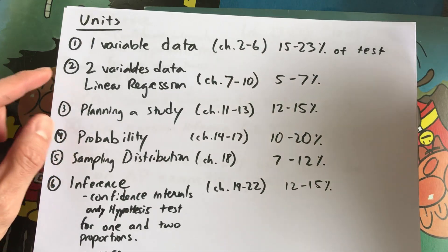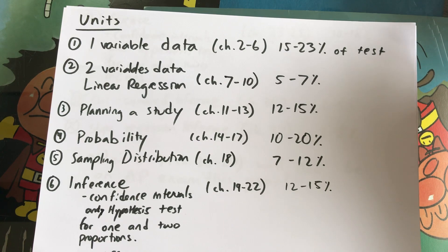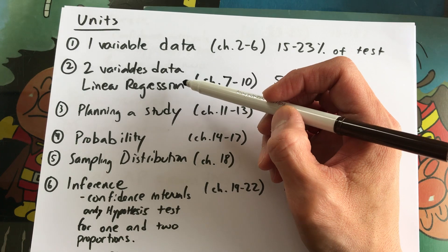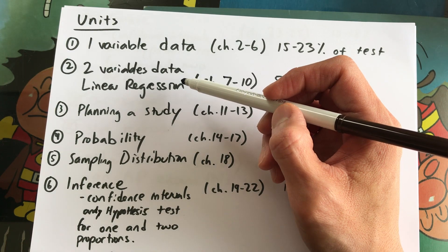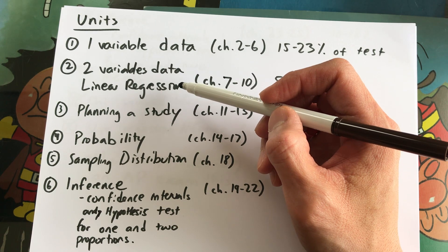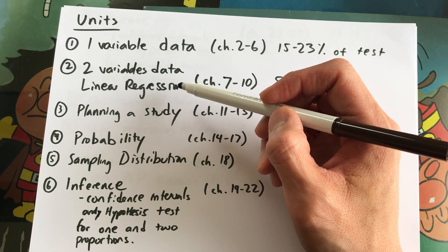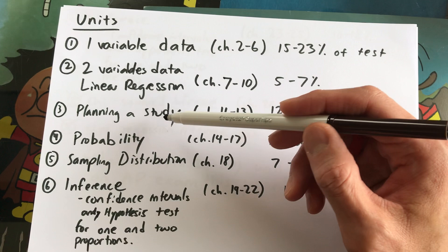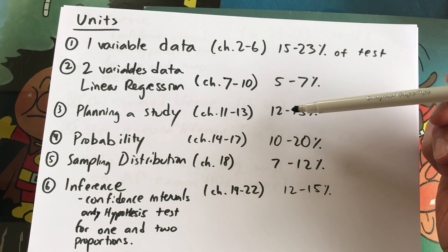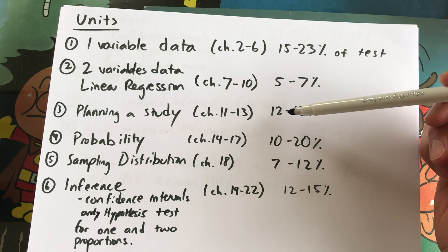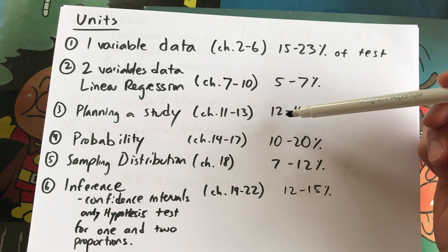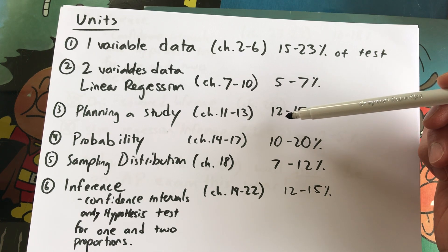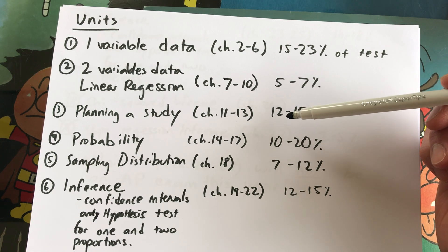Unit 2 is two-variable data — categorical or quantitative. This is where you do linear regression, find the slope of your least squares regression line, re-express data, interpret computer outputs, and discuss direction, form, strength, and unusual features. Unit 3 is planning a study — what we did at the beginning of the year — covering the difference between an experiment and an observational study, retrospective and prospective studies, the four characteristics of a good experiment, and the different types of sampling: stratified, systematic, etc.